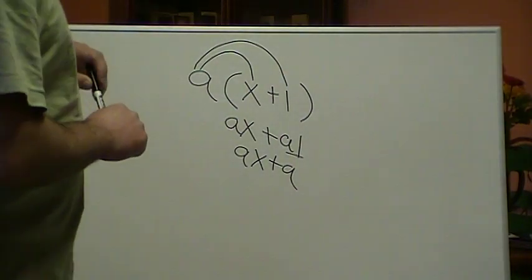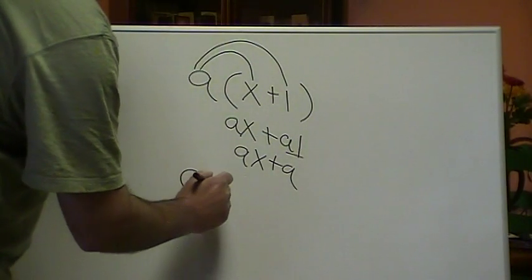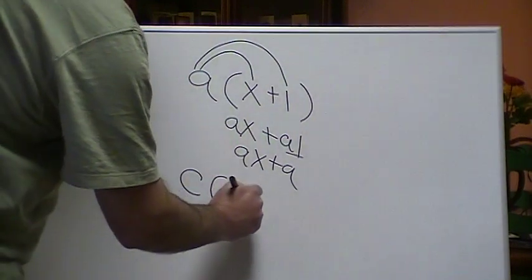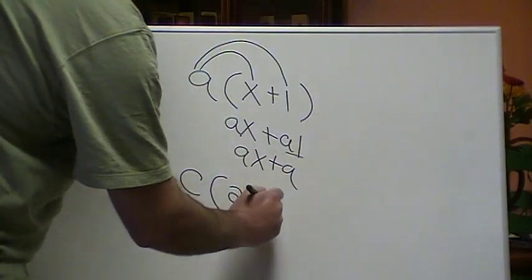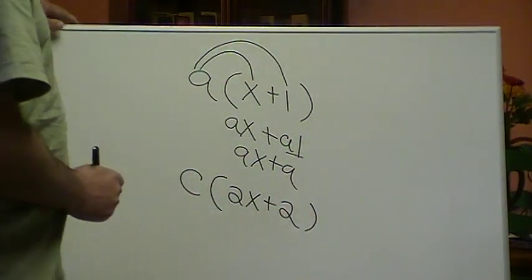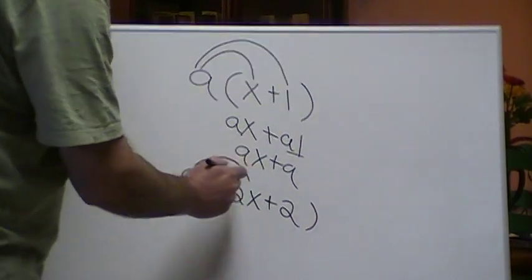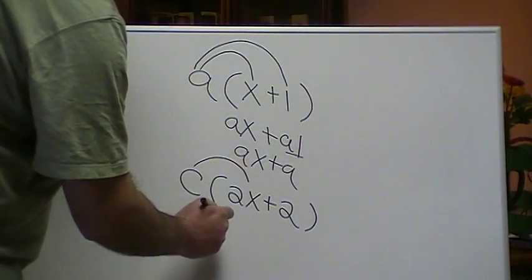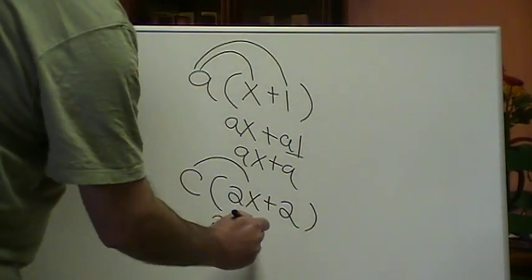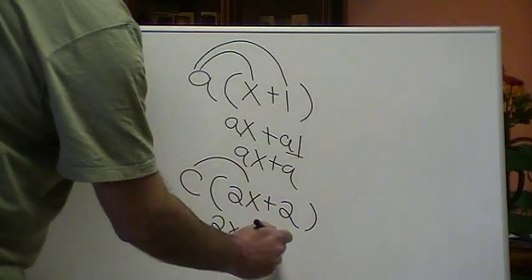Let's try one more just to make sure you have it down. Let's say we have c times 2x plus 2. We do the same thing. We take the c and multiply it by the 2x, so it's going to be 2xc. Then plus c times 2, which is going to be 2c.